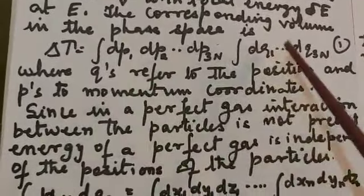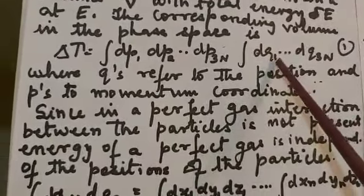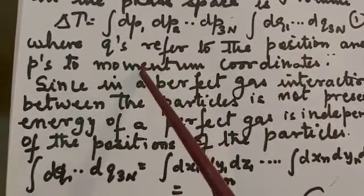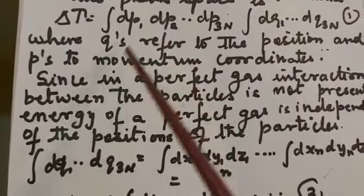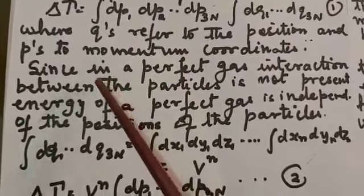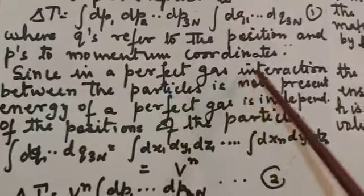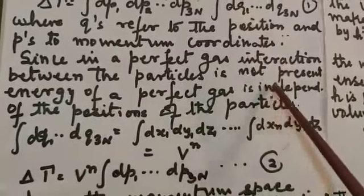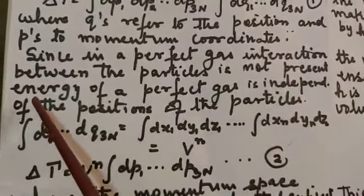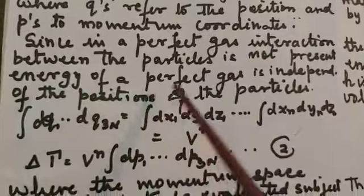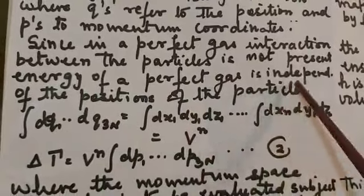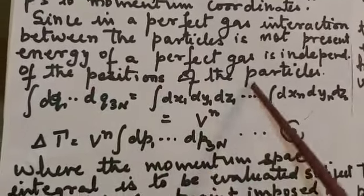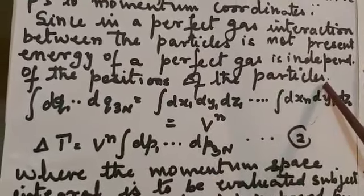Here the q's refer to the position coordinates and p's refers to the momentum coordinates. For a perfect gas, interaction between the particles is not present. Energy of a perfect gas is independent of the position of the particles.